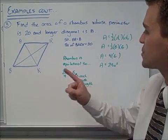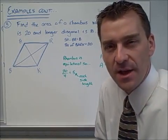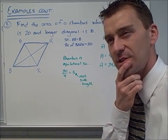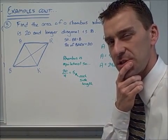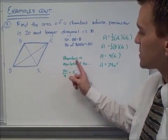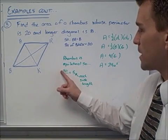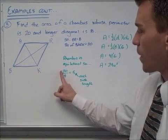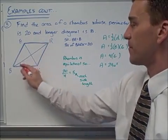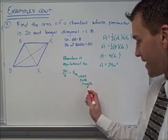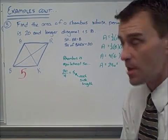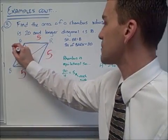Since I see diagonals, I'll use the area of a kite formula. Since the rhombus is equilateral, 20 divided by 4 means each side length is 5. So all four sides equal 5.